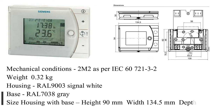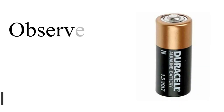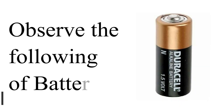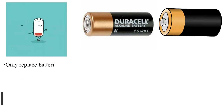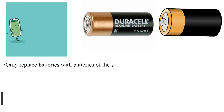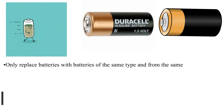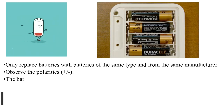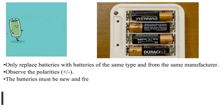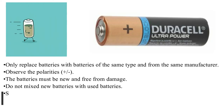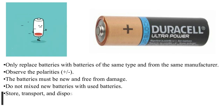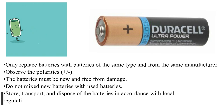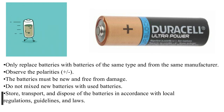Housing: RAL 9003 signal white; base: RAL 7038 gray. Size — housing with base: height 90 mm, width 134.5 mm, depth 30 mm. Battery safety: only replace batteries with batteries of the same type and from the same manufacturer. Observe the polarities (+/−). Batteries must be new and free from damage. Do not mix new batteries with used batteries. Store, transport, and dispose of batteries in accordance with local regulations, guidelines, and laws.